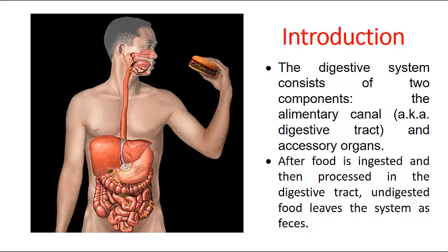Now let's move on to the introduction of this anatomy. The digestive system consists of two components: the alimentary canal, which starts from the mouth and ends at the anus, and accessory organs such as the liver, pancreas, and gallbladder. After food is ingested, it is processed in the stomach — part of the upper GI tract — and then digested in the small intestine, where nutrients are absorbed.